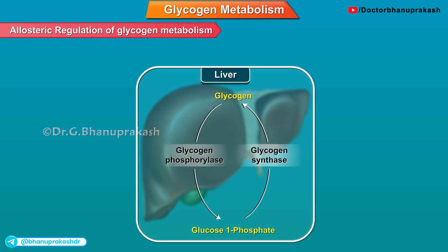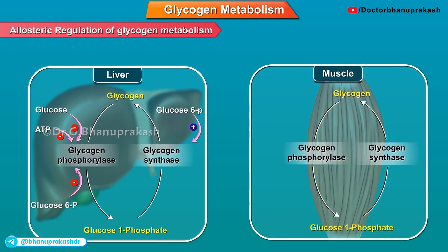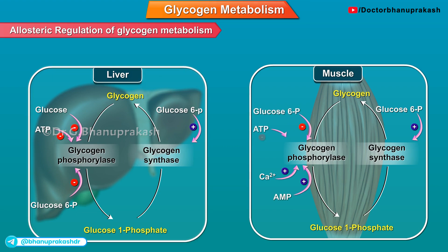Allosteric regulation of glycogen metabolism: In the liver, the enzymes are glycogen synthase and glycogen phosphorylase. The allosteric activator of glycogen synthase is glucose-6-phosphate; there is no allosteric inhibitor. There is no allosteric activator for glycogen phosphorylase; the allosteric inhibitors are glucose, glucose-6-phosphate, and ATP. In the muscle, glycogen synthase has glucose-6-phosphate as its allosteric activator and no inhibitor. Glycogen phosphorylase has calcium and AMP as allosteric activators, and glucose-6-phosphate and ATP as allosteric inhibitors.